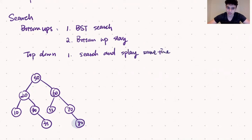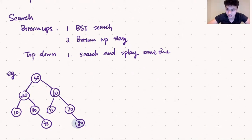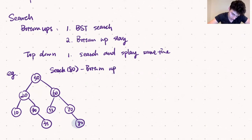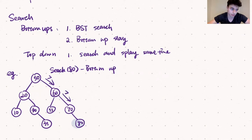Now let's give an example. As an example, let's search for 80, which will eventually make us splay as well. Using bottom-up splay first, we have to use a binary search tree search to find our node. We're going to start at 50, move rightwards because we are larger than 50, leaving us at 60. Again, we move rightwards because we're larger than 60, leaving us at 70. We're still larger than 70, so we move rightwards and land on 80, so we've found our node.